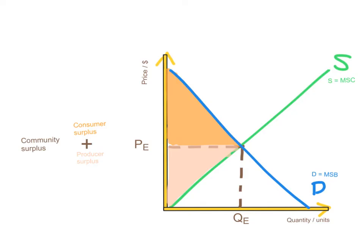This diagram here is one that we've seen before. We know from previous videos that the supply curve is the marginal social cost curve and the demand curve is the marginal social benefit curve. So we know that the optimum allocation of resources occurs at the equilibrium point here where marginal social cost equals marginal social benefit. So at equilibrium this is the optimum allocation of resources.